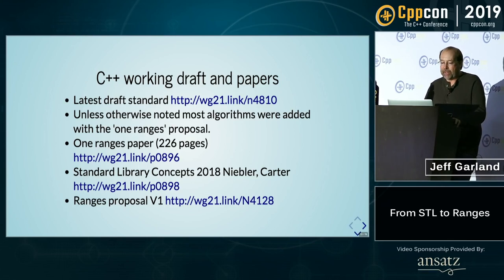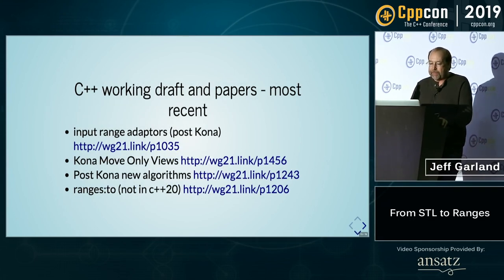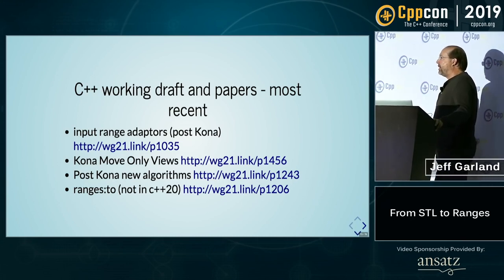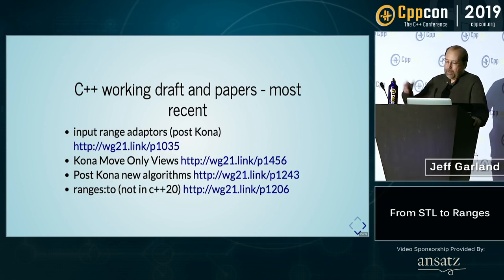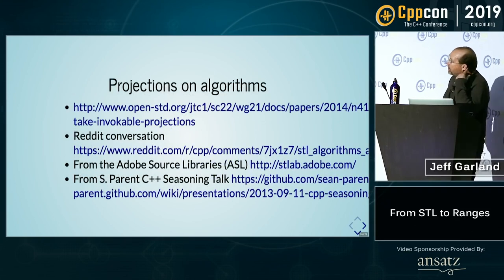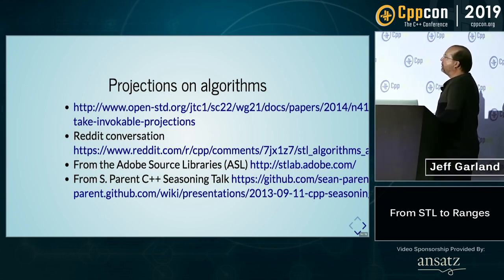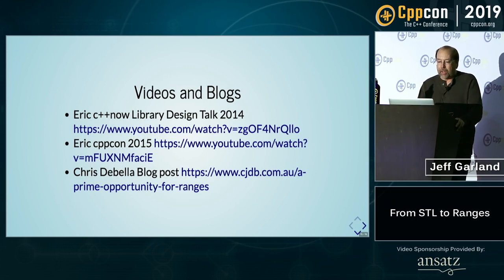You can go to the link and get a copy of the working draft. Here are some of the new algorithms. I will say there are some fans of Range V3 that will be disappointed — things like ranges::to, which did not get into C++20. That allows you to take the result of your range view and create a new collection from it. There's also a 2014 paper that talks a lot about it, a recent Reddit conversation I linked here, and Sean Parent's talks are always worth the time. And then some more videos and blogs — Chris wrote a nice blog post a while back, and there are some links to span resources.